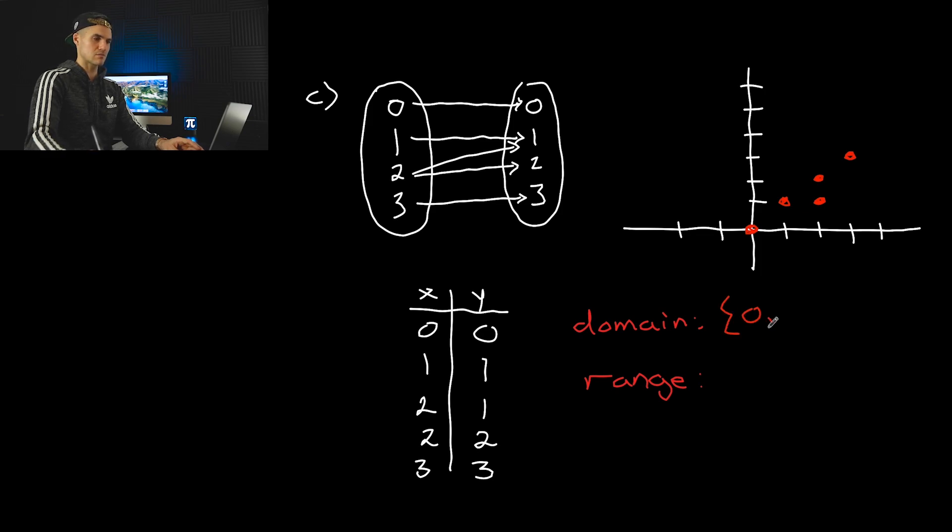So what's the domain? Zero, one, the twos are repeating we only write them once, and then three. Range, the ones are repeating, only write them once. Zero, one, two and three, the set of y values for the range. And then as I mentioned, vertical line test is failing right here at that x value of two. So we know that this relation is not a function.